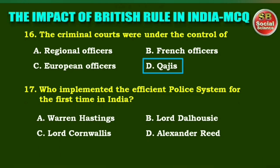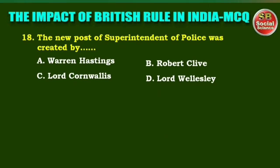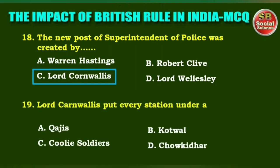Next question: Who implemented the efficient police system for the first time in India? Options are: Warren Hastings, Lord Dalhousie, Lord Cornwallis, Alexander Reed. The right answer is option C: Lord Cornwallis. Next question: The new post of Superintendent of Police was created by — Warren Hastings, Robert Clive, Lord Cornwallis, Lord Wellesley. The right answer is option C: Lord Cornwallis.